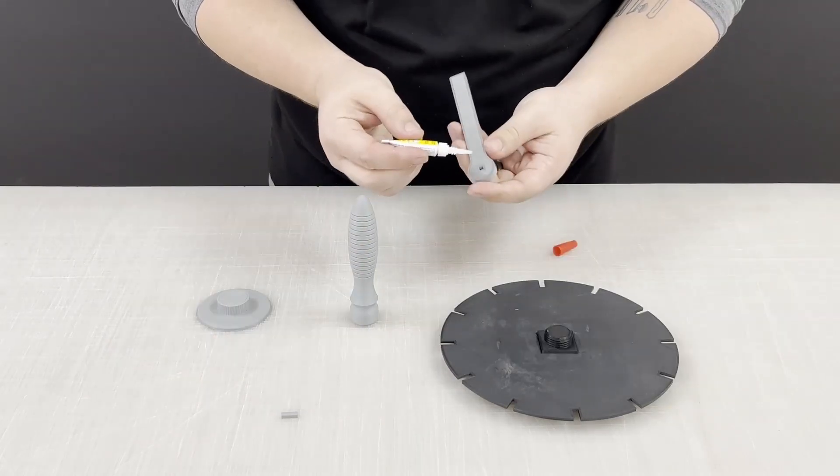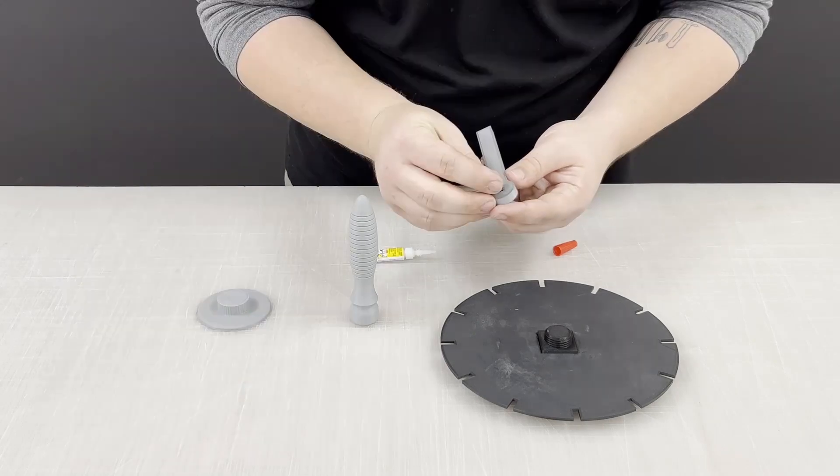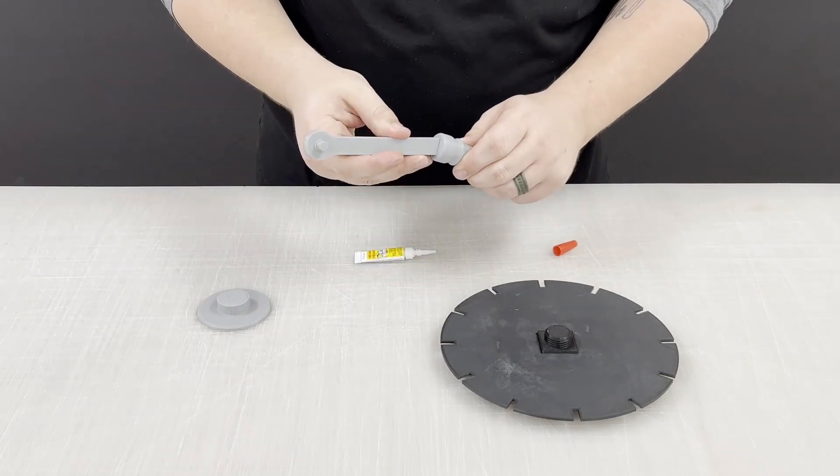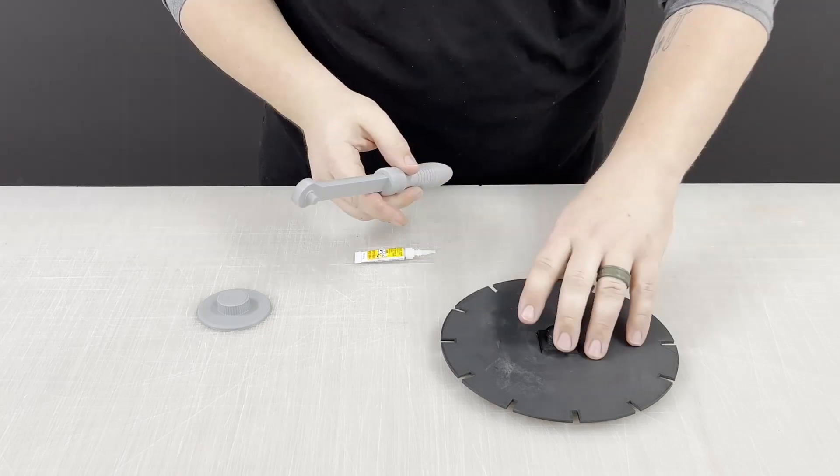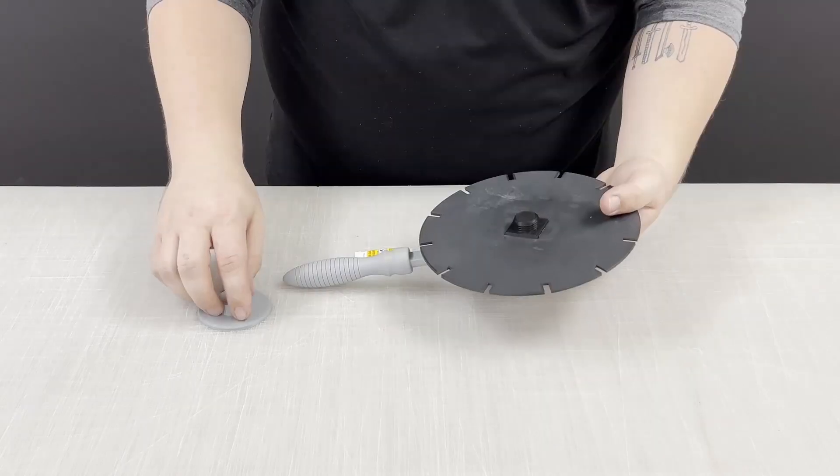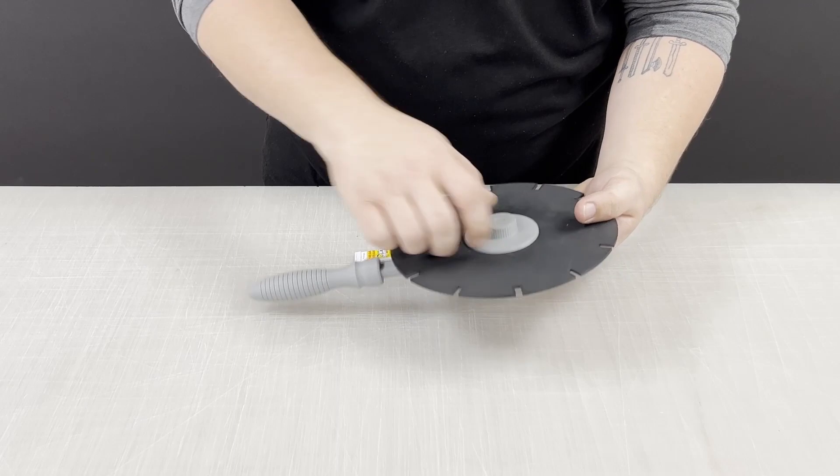Glue the axle reinforcement into the small hole on the back of the axle arm, glue the axle arm into the handle, and insert the axle into the bearing. Finally, screw the knob onto the front of the disc.